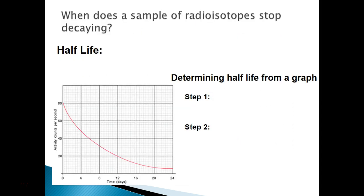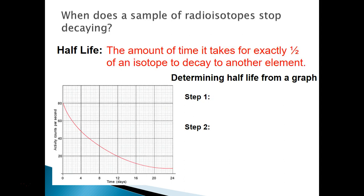Now, half-life. When does a sample of a radioisotope stop decaying? Technically, never. We measure the rate of radioactive decay with half-life: the amount of time it takes for one half of an isotope to decay into another element. If the half-life is 10 minutes, every 10 minutes the sample loses half its mass. We can determine half-life two ways — from an equation and from a graph.